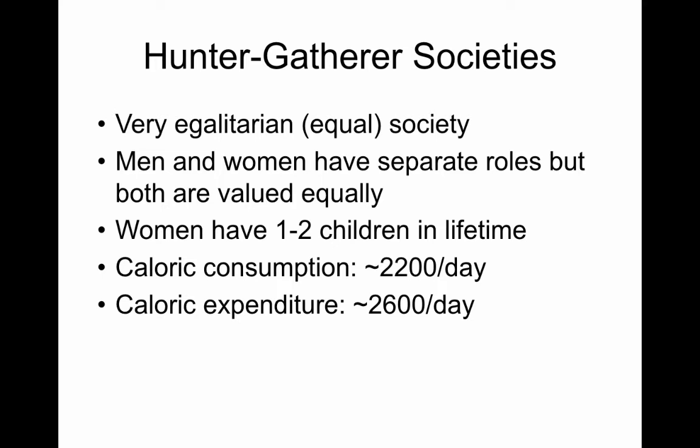Egalitarian doesn't mean things were perfectly equal — there might've been a standout person who everyone looked to as a leader with a bit more social capital — but everybody was viewed as equal, because inequality is a luxury in a way. You can only afford to not value someone when there are so many people that individuals are essentially expendable. Small hunter-gatherer societies valued everyone and showed that in various ways.